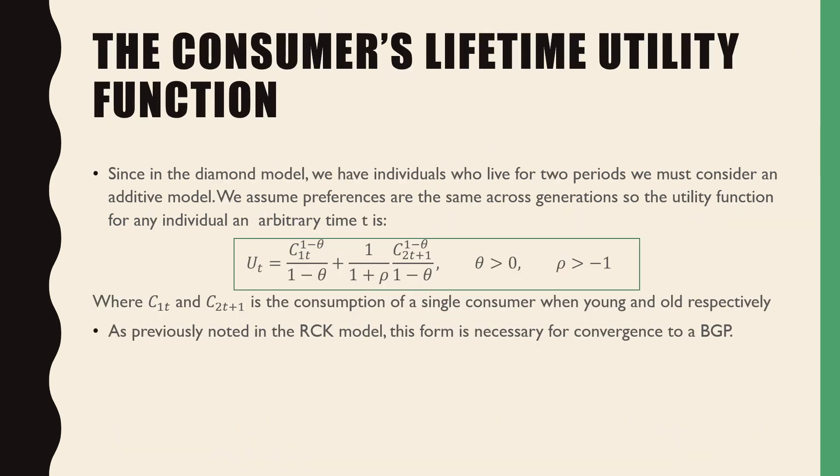Since in the Diamond model we have individuals who live for two periods, we must consider an additive model. We assume preferences are the same across generations, so the utility function for any individual at an arbitrary time t is the following, where C1t and C2t+1 is the consumption of a single consumer when young and old respectively.